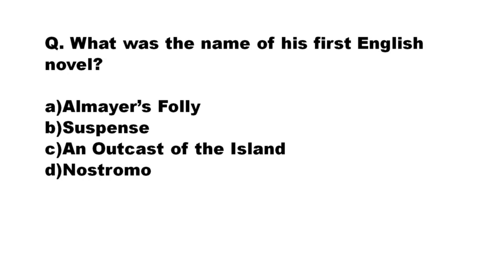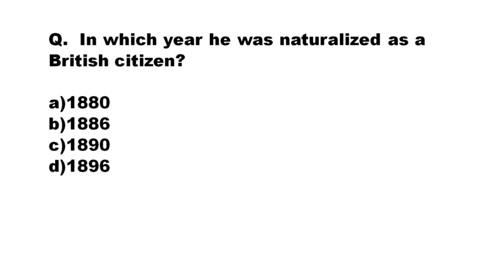Our next question is: what was the name of his first English novel? The options are: A) Almayer's Folly, B) Suspense, C) An Outcast of the Islands, D) Nostromo. The correct answer is option A: Almayer's Folly. Our next question: in which year was he naturalized as a British citizen? The options are: A) 1880, B) 1886, C) 1890, D) 1896. The correct answer is option B: 1886 — he got British citizenship in the year 1886.